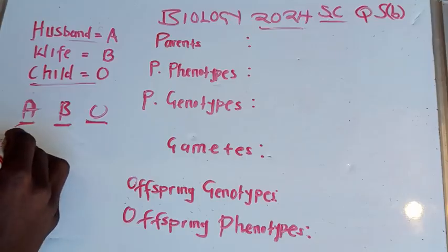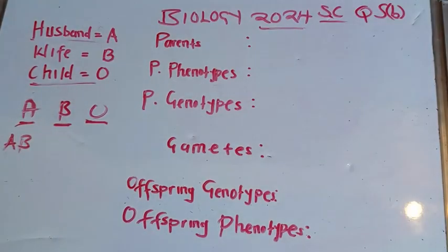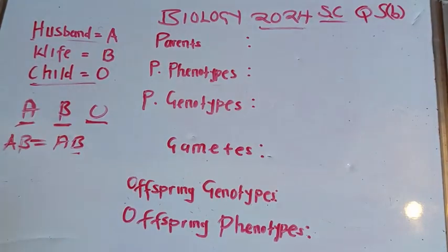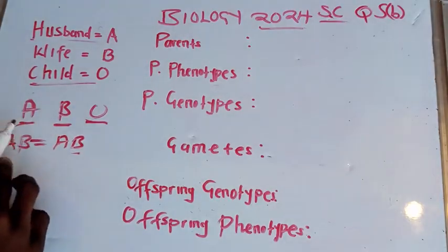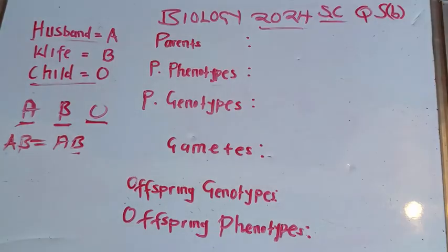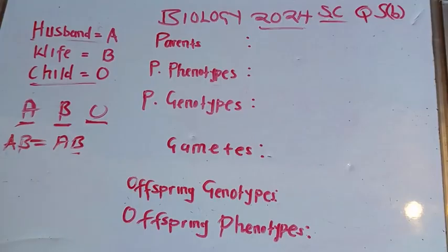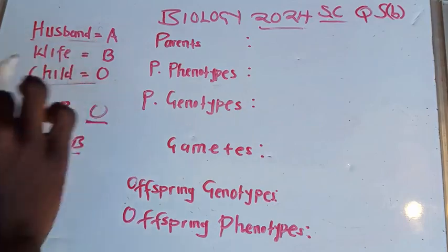If you have the allele for blood group A and the allele for blood group B together, this results in a child having blood group AB. Because both are dominant alleles, this is what we call co-dominance — both alleles show up, and as a result the person has blood group AB.